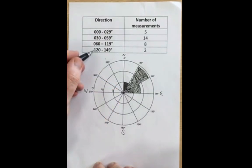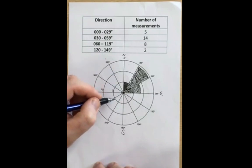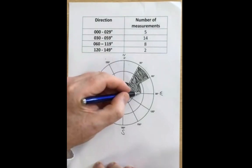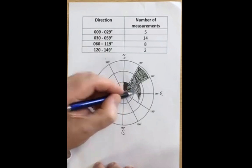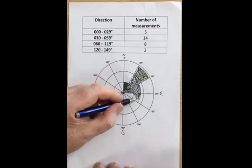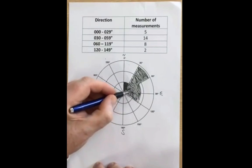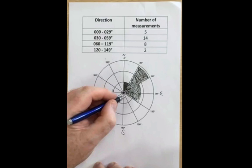Final one here between 120 and 149. We've got eight values through here as well. Let's just make sure we get those in. And finally, then we have two values for 120 to 149, which will just take us down to there.